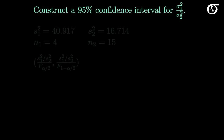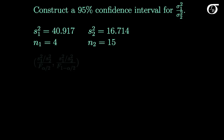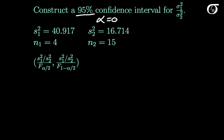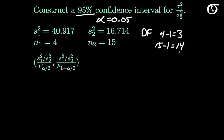Let's say we want to construct a 95% confidence interval for the ratio of population variances. Here is our information and our formula for the confidence interval. A 95% confidence interval means alpha is 0.05. Our degrees of freedom in the numerator are simply N1 minus 1, so this is going to be 4 minus 1, or 3 degrees of freedom in the numerator, and 15 minus 1, or 14 degrees of freedom in the denominator.